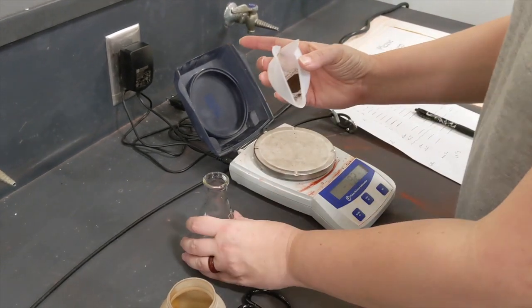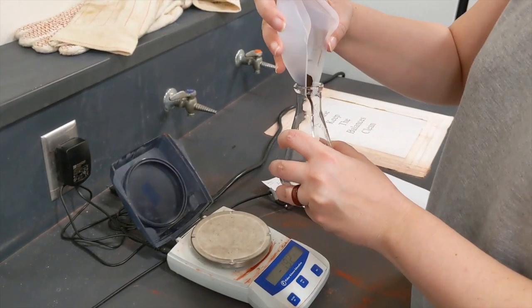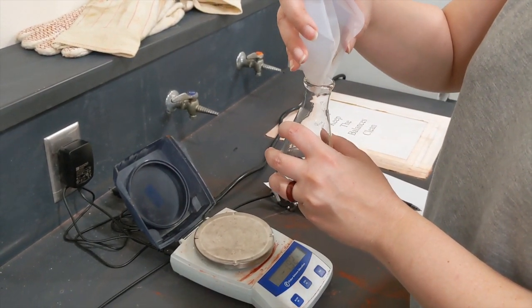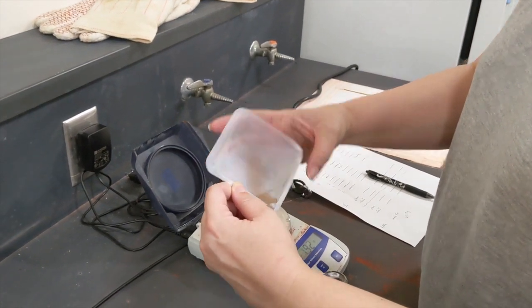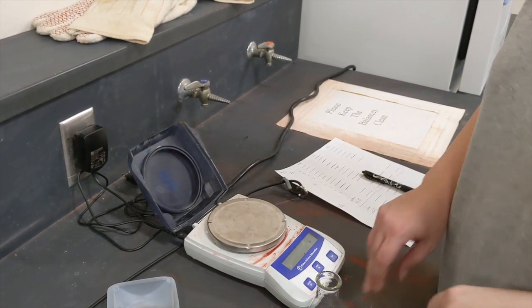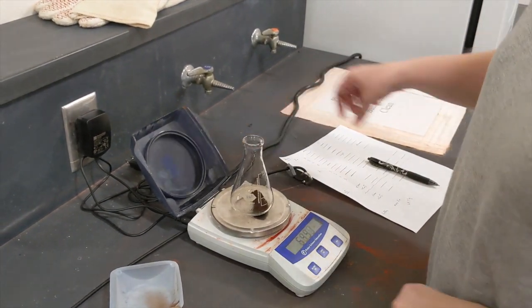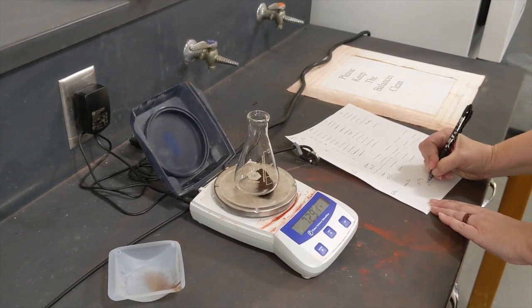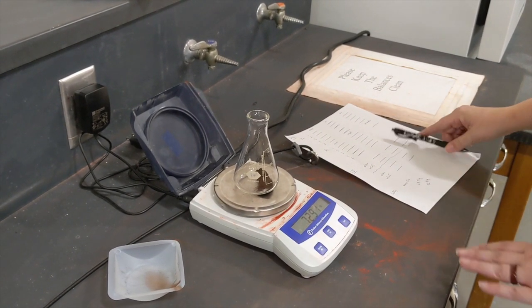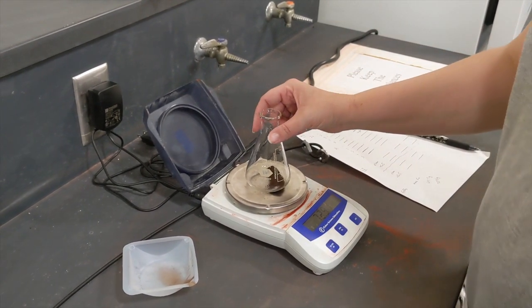So I'll transfer my iron. We can see that there's a little bit left behind, but that's fine. I'm going to re-zero my balance and find the new mass of the Erlenmeyer flask and the iron that's in it. My new mass is 72.91 grams. Without a calculator, I can tell I got pretty close to the three grams I was supposed to have.